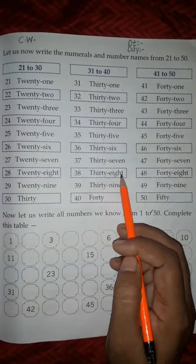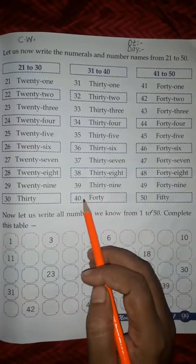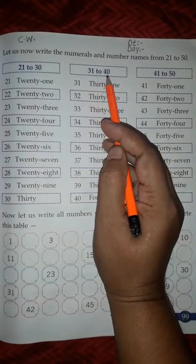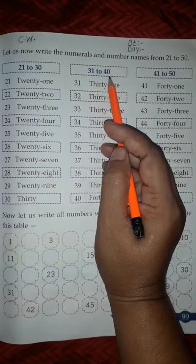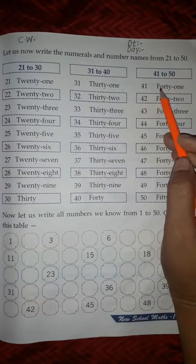39. THIRTY-NINE. 40. FORTY. These are the numbers and number names from 31 to 40. Now 41 to 50.